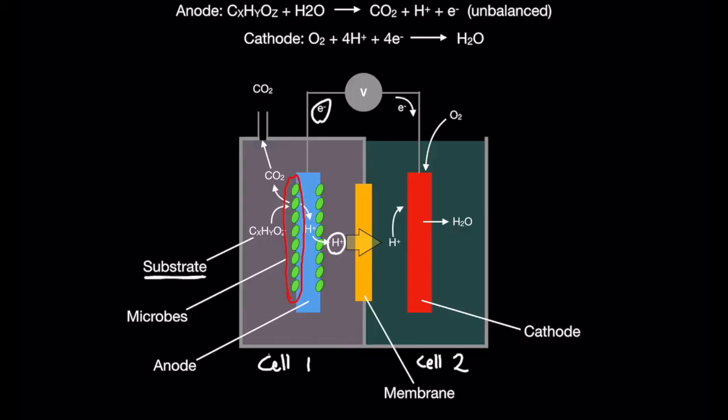The bacteria live on the surface of an electrode, and this electrode is called the anode because electrons flow out of it. The hydrogen ions migrate through the cell and pass through a membrane into the other half-cell.